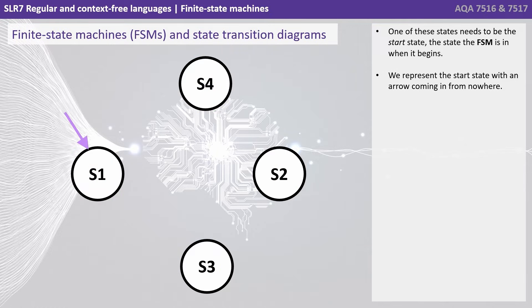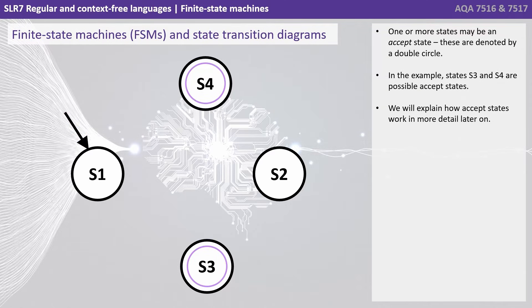One of these states needs to be the start state — the state the finite state machine is in when it begins. We represent the start state with an arrow coming in from nowhere. One or more states may be what we call an accept state, and these are denoted by a double circle. In the example, states S3 and S4 are possible accept states. We will explain how accept states work in more detail later on.